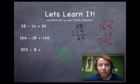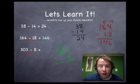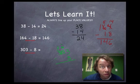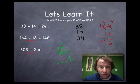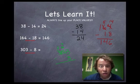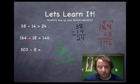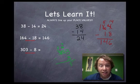Now the ones-place 3 borrows from that 10. The 10 becomes a 9, and the 3 becomes a 13. So now what's 13 minus 8? That's 5 — now you can give that answer.